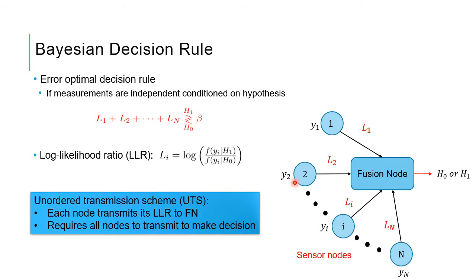In the Bayesian detection framework, the goal is to minimize the probability of error. The error-optimal decision rule is as follows: every node computes its log likelihood ratio or LLR. The error-optimal rule adds the LLRs up and compares the sum to a threshold beta. If it is more than beta, declare H1; if it is less than beta, declare H0. Beta is a constant which depends on the prior probabilities of the hypotheses. The LLR of node i is defined as the logarithm of the ratio of conditional densities of measurement Yi given H1 to H0. Since the nodes are geographically separated, one way to implement this rule is by making all nodes send their LLRs to the fusion node, which then adds them up and declares a hypothesis. We will call this the unordered transmission scheme.